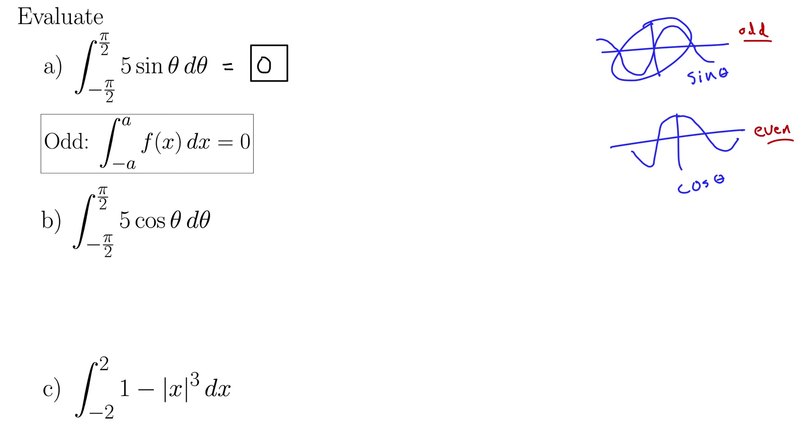Let's take a look at part B. We have the integral from negative pi over two to pi over two of five cos theta d theta. We decided that cosine was even. So since this is even, this becomes two times the integral from zero to pi over two of five cos theta d theta. We still have to do a little bit of work here, but it's a lot easier with that zero instead of negative pi over two.